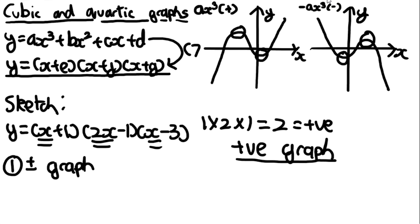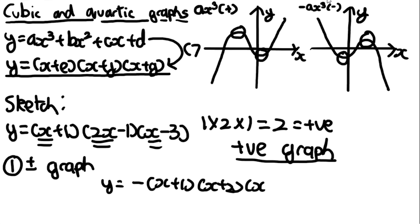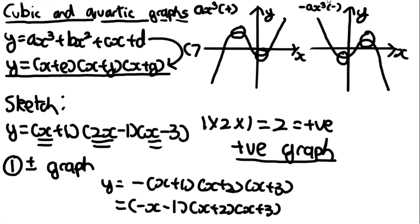As a side note: if the cubic is given as y = −(x + 1)(x + 2)(x + 3), the minus represents a factor of −1. You multiply just one bracket by −1 — it doesn't matter which — giving for example y = (−x − 1)(x + 2)(x + 3). Multiplying the x-coefficients: −1 × 1 × 1 = −1, which is negative, so that would be a negative graph.